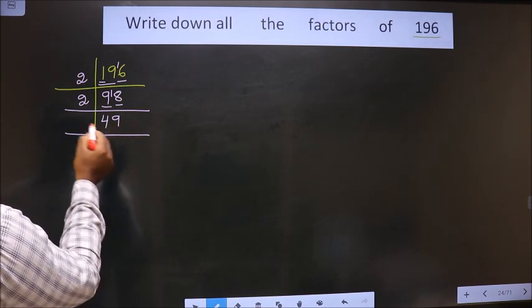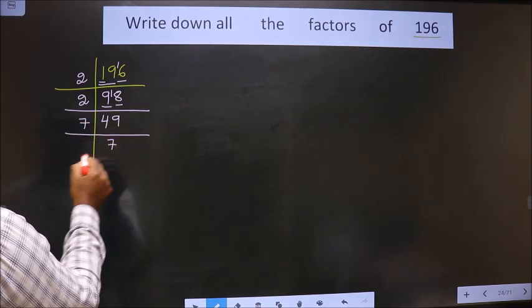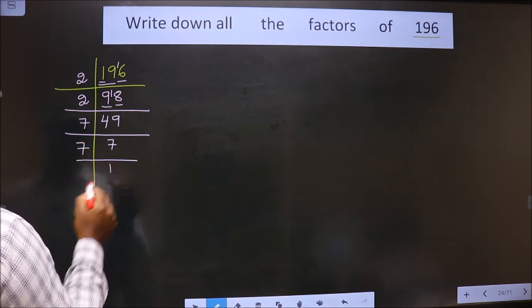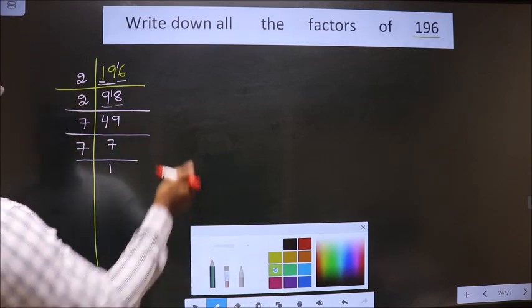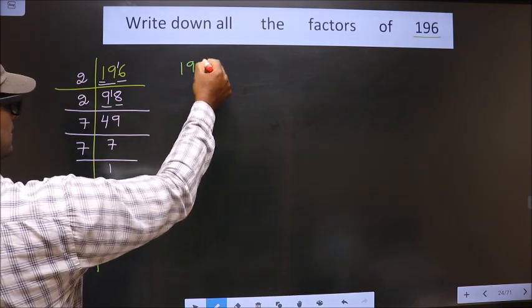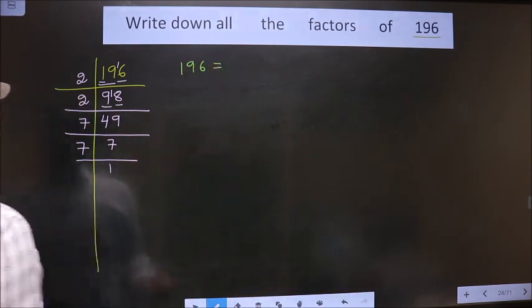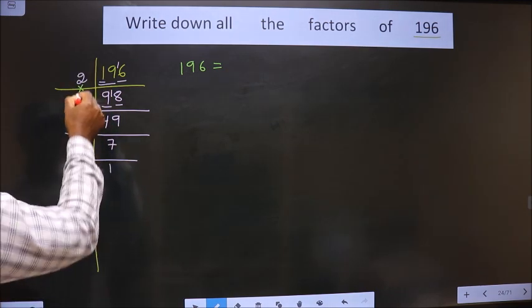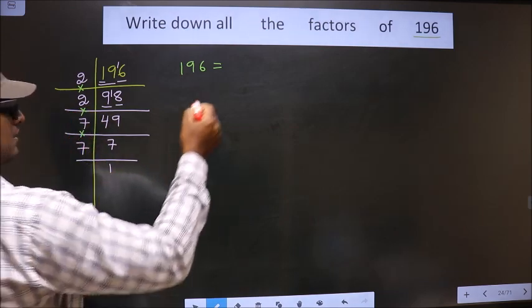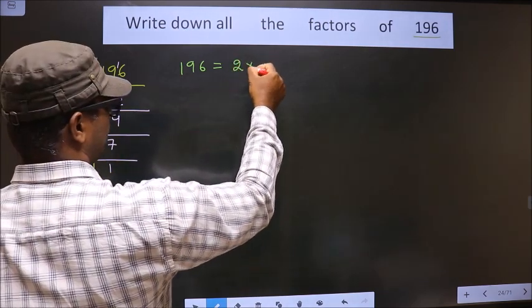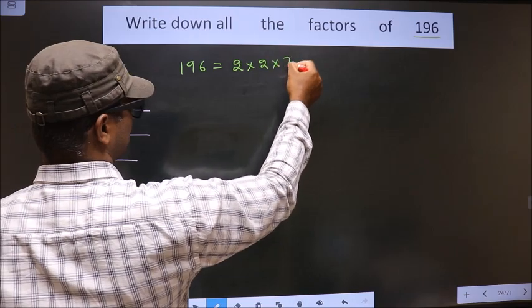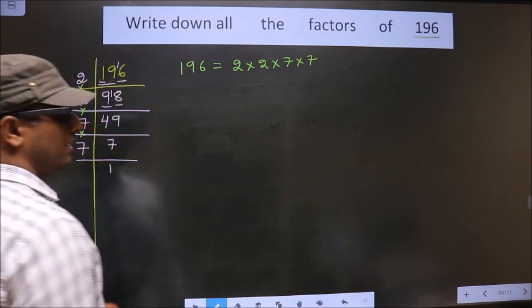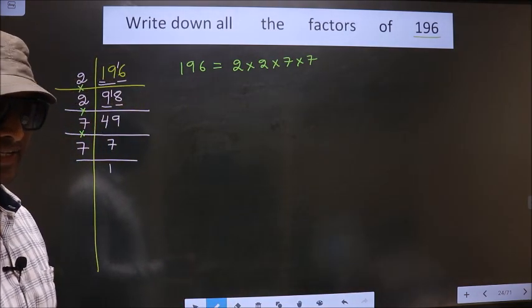Now here we have 49. 49 is nothing but 7 sevens. Now 7 is a prime number so 7 and 1. So now 196 is equal to the product of these numbers, that is 2 into 2 into 7 into 7. Clear? So far? Next.